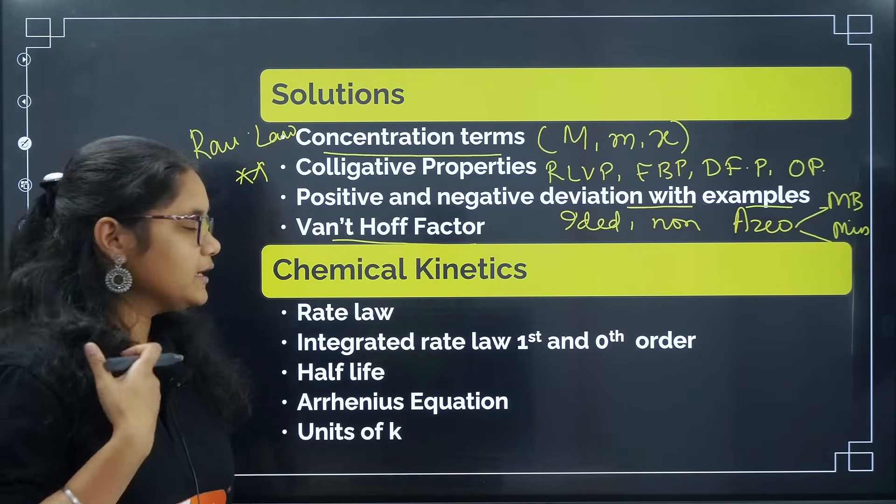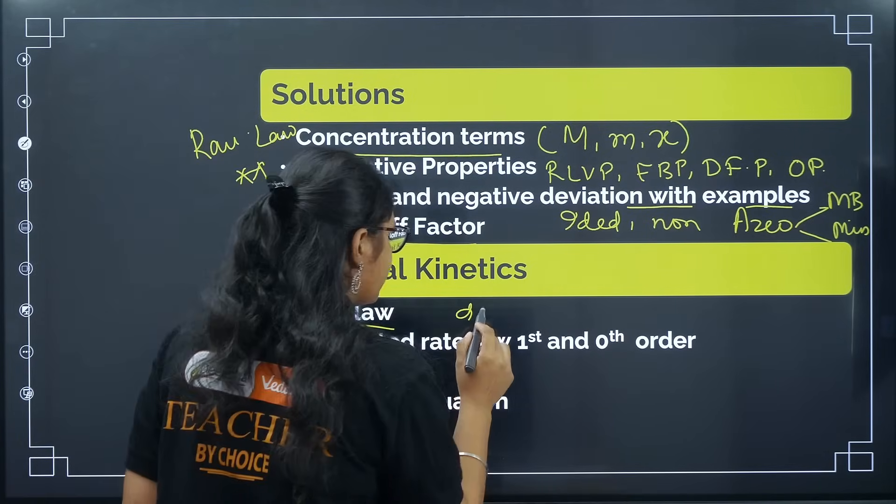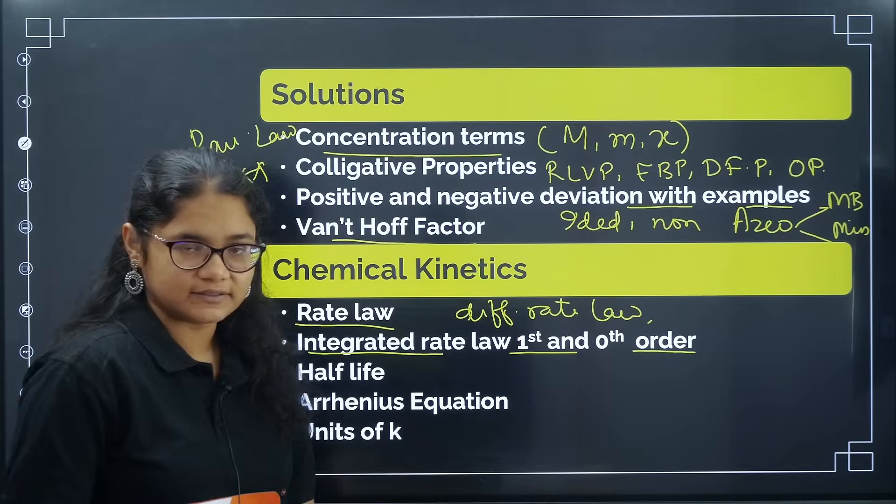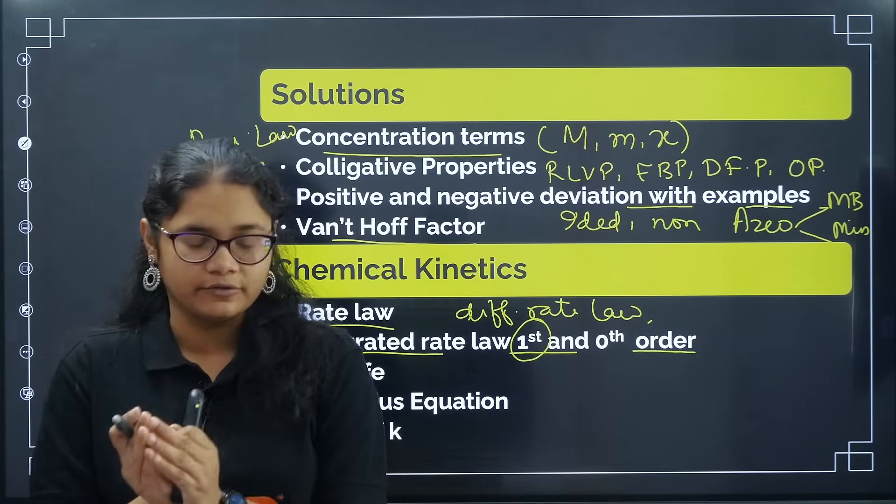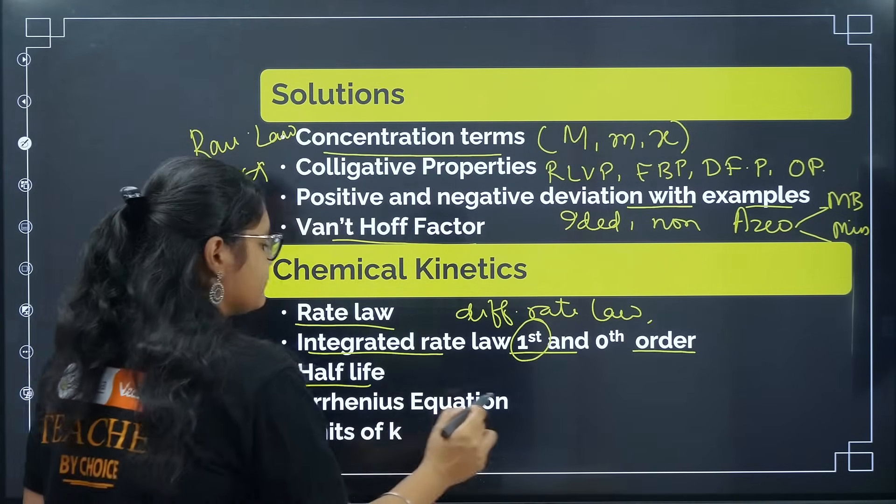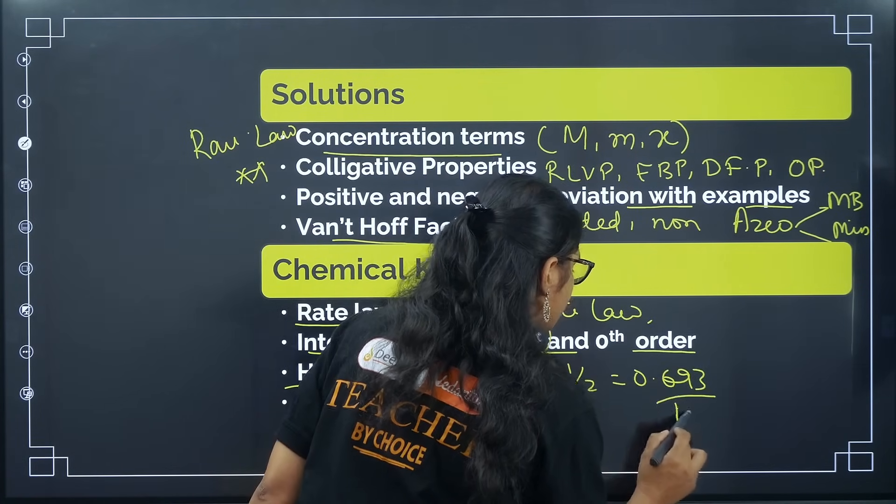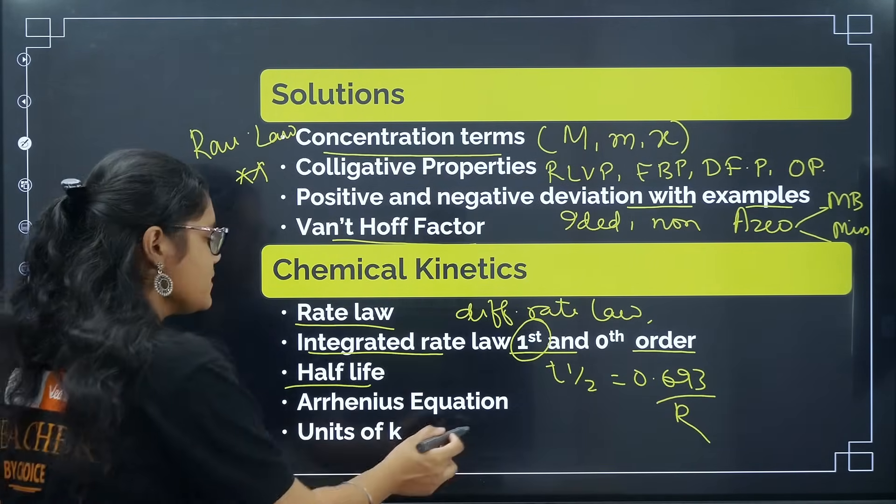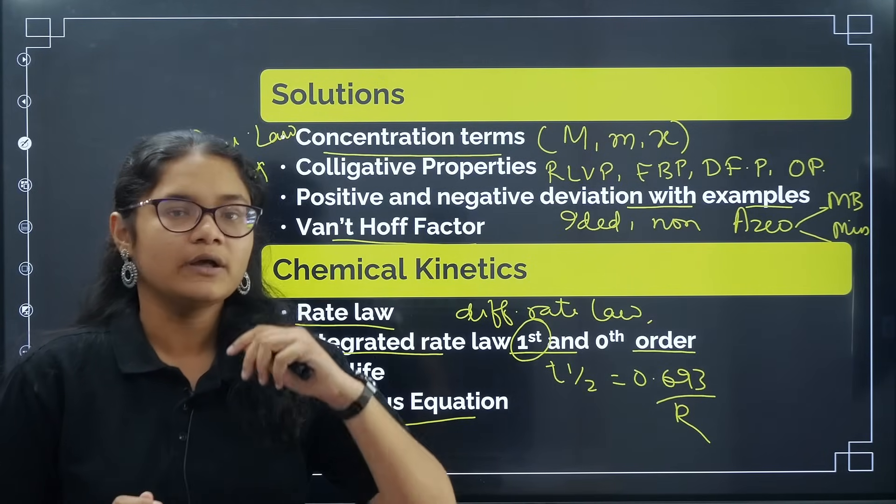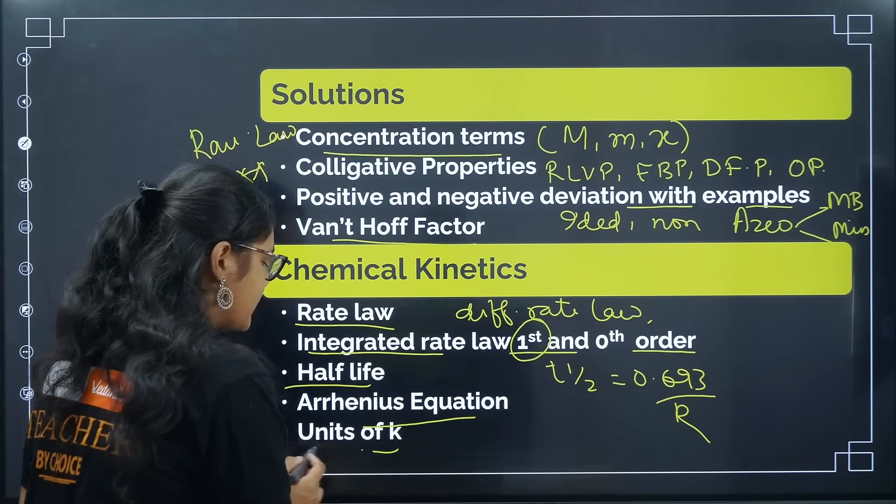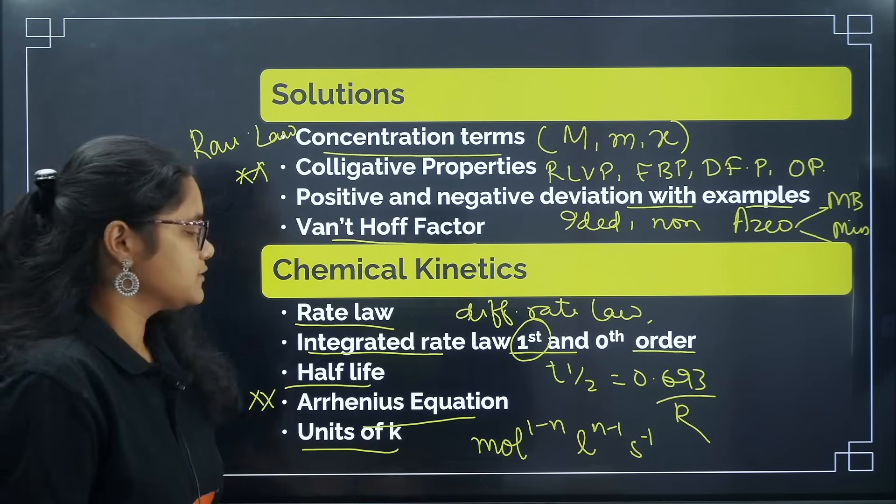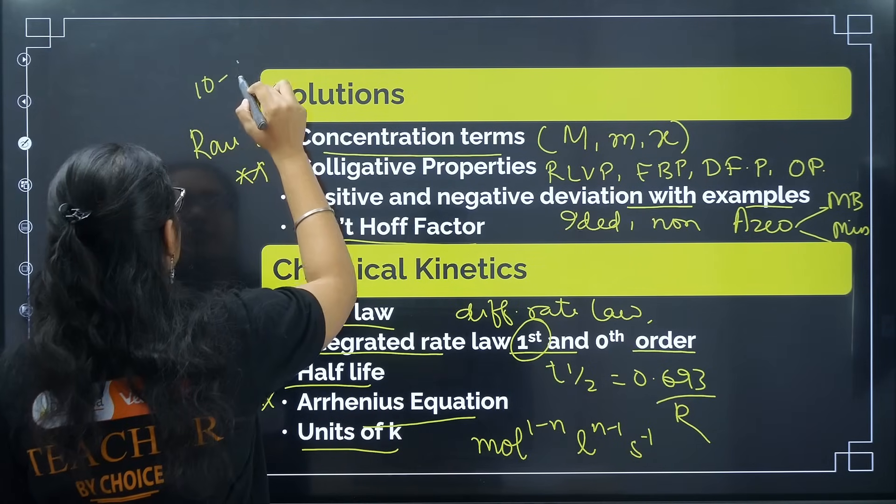Coming to chemical kinetics, first is rate law. In differential rate law, how to write the differential rate law. Next, integrated rate law for 0th, 1st order - first order is very, very important: k equal to 2.303 by t log of a naught by a, this formula is very important. Then, half-life: t half is equal to 0.693 by k, questions are asked from here. Arrhenius equation is very, very important - just check the graph properly for this and the formula with t1, t2, k1, k2, activation energy. Then the general formula for units of k: moles to the power of 1 minus n, litre to the power of n minus 1, second inverse.